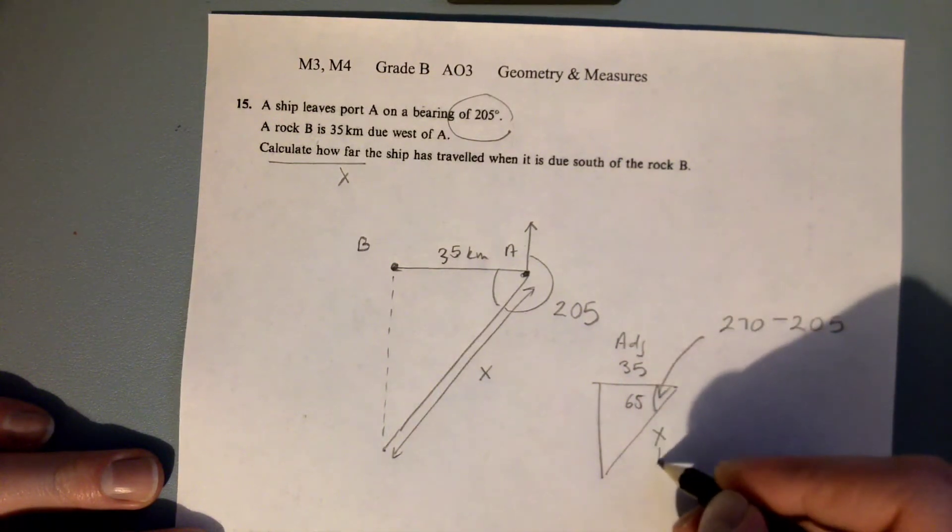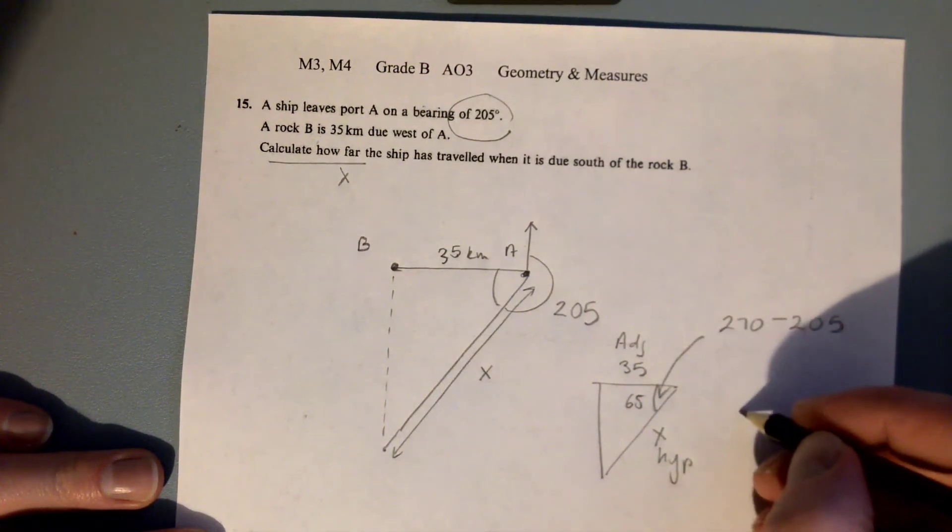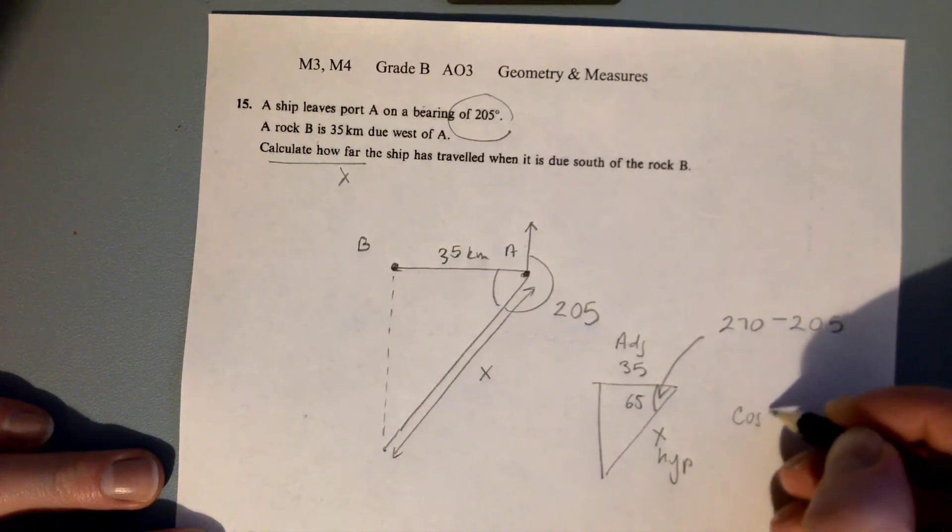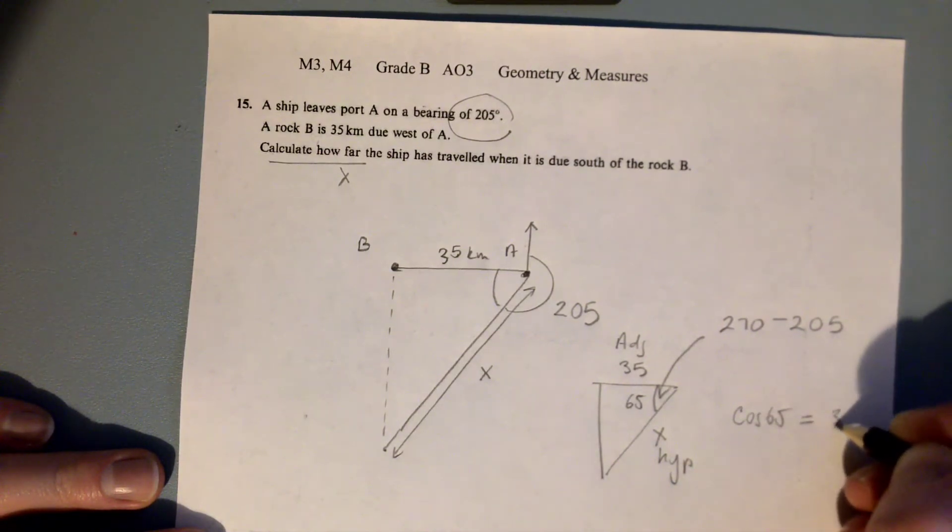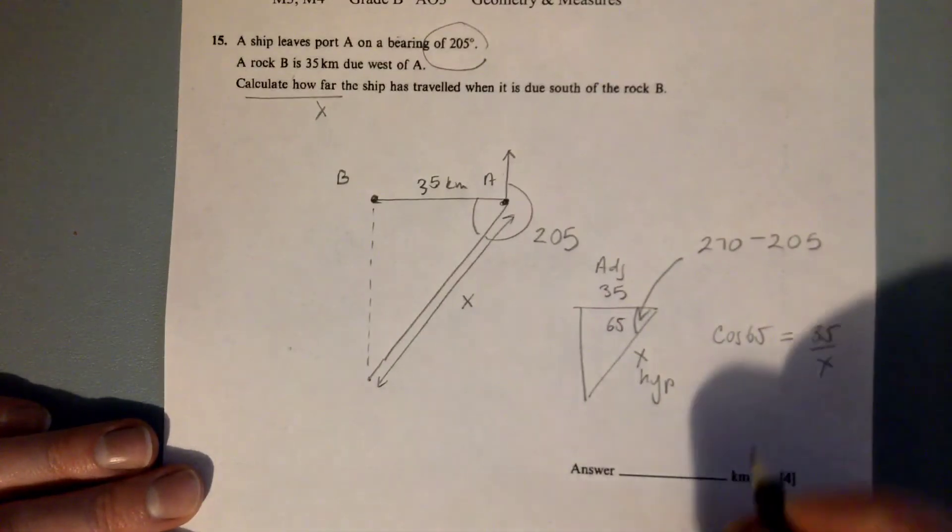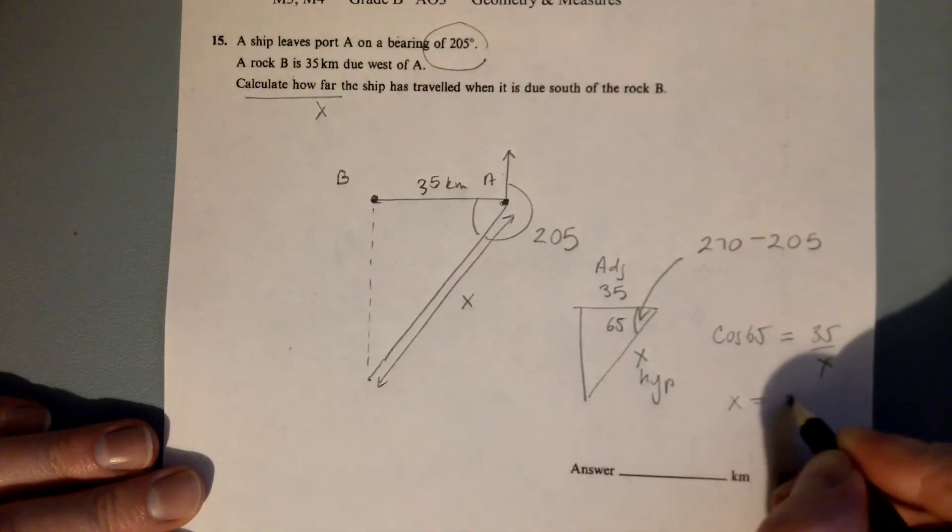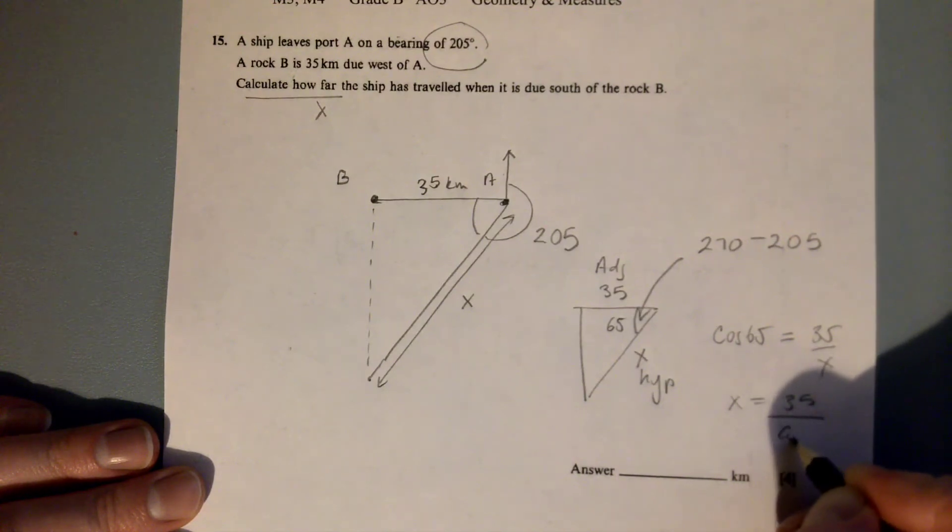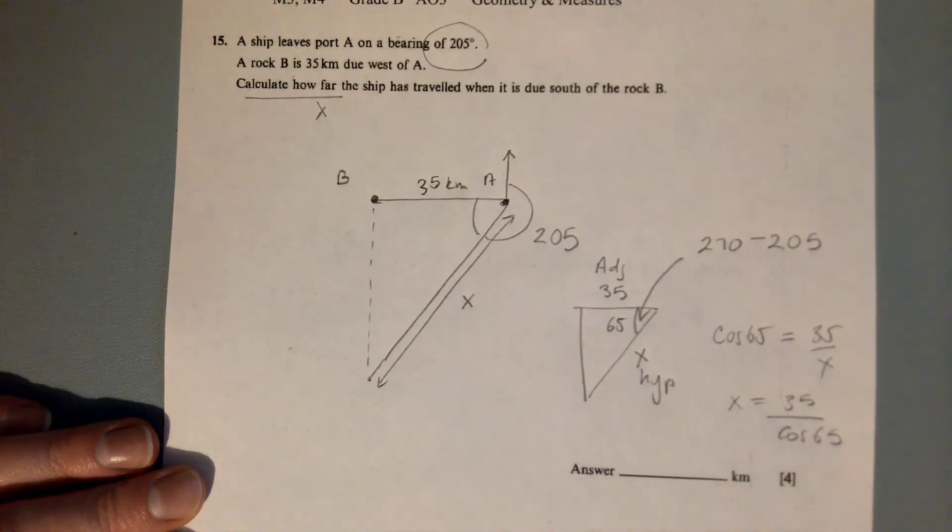So to work out our answer we want to use cos. Cosine of the angle is equal to the adjacent over the hypotenuse, so cos of 65 is equal to 35 over x. Then if you calculate 35 divided by cos 65, you get your answer.